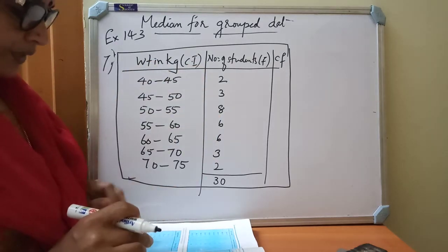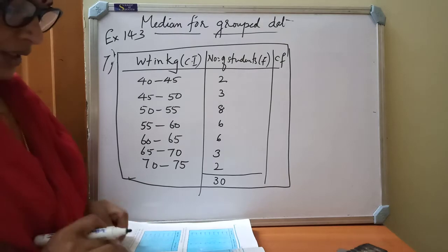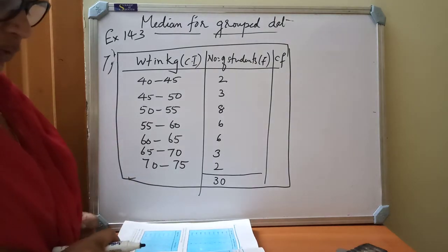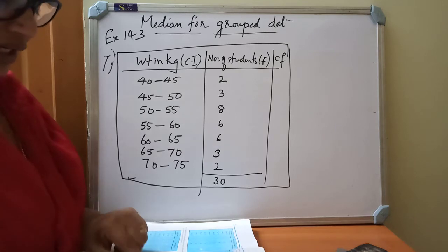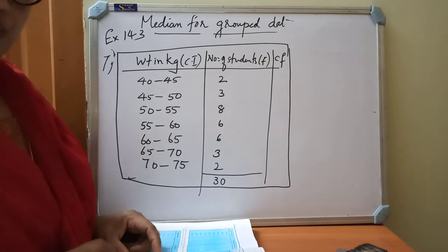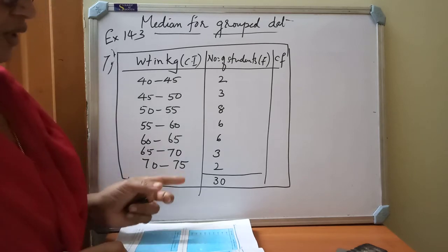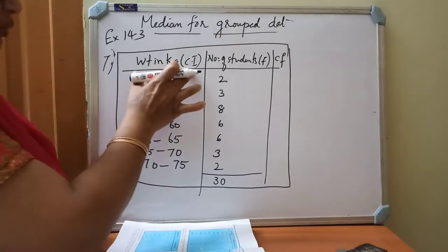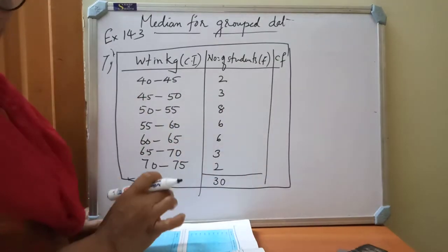The last question, question 7, now I am going to do that. They are given the distribution below gives the weight of 30 students of class, find the median weight of the students. So we must find out the median weight of the students. For that they are given class interval and the frequencies.